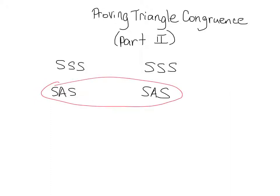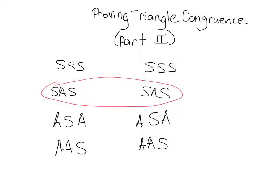Just in case you are curious, the other proofs that we can get to and will get to are angle-side-angle being congruent to angle-side-angle, and finally angle-angle-side being congruent to angle-angle-side. All of this will become clear when you see an example for each one, and we will focus on that one today.